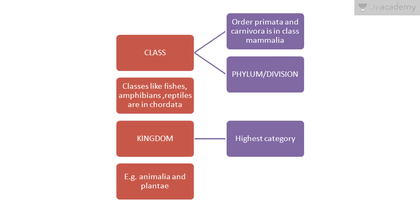Class: Order Primata and Order Carnivora — Primata, which includes primates including us, belongs to the class Mammalia. Phylum or division: phylum is used for animals and division for plants. Classes like fishes, amphibians, and reptiles are included in the phylum Chordata. The highest category is kingdom — for example, Animalia for animals and Plantae for plants.